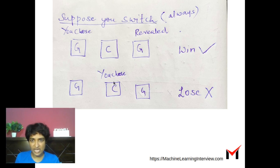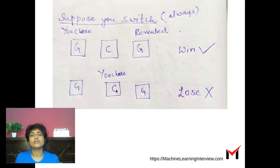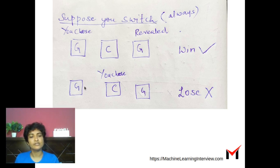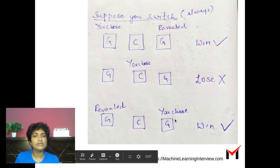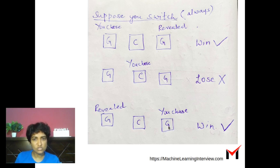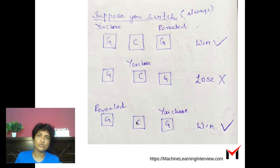If you chose the second door, which has a car, the host could reveal one of the other two goats. Since you choose to switch, you will end up switching from the car to the other goat that was not revealed by the host, and you will lose. In the third case, suppose you chose the third door with a goat — the host reveals the other goat, which is behind door 1. You switch to the second door, which has the car, and you win.